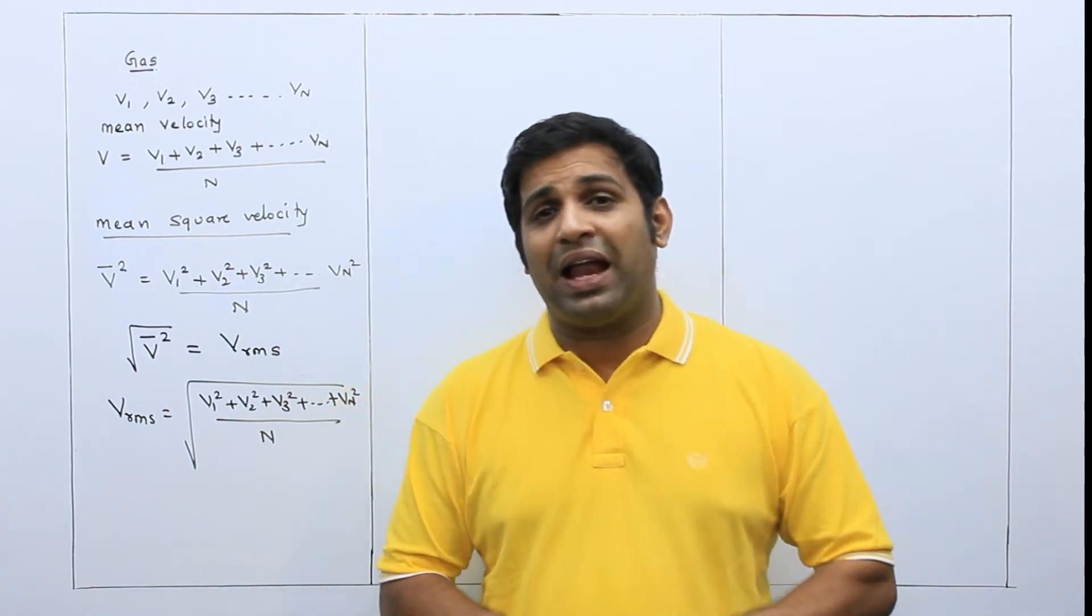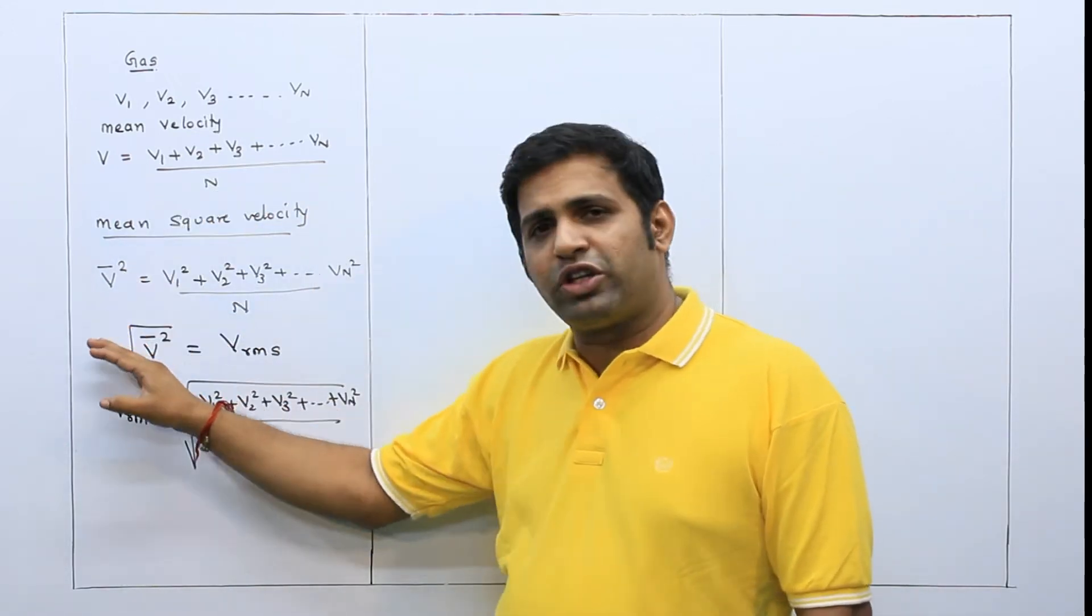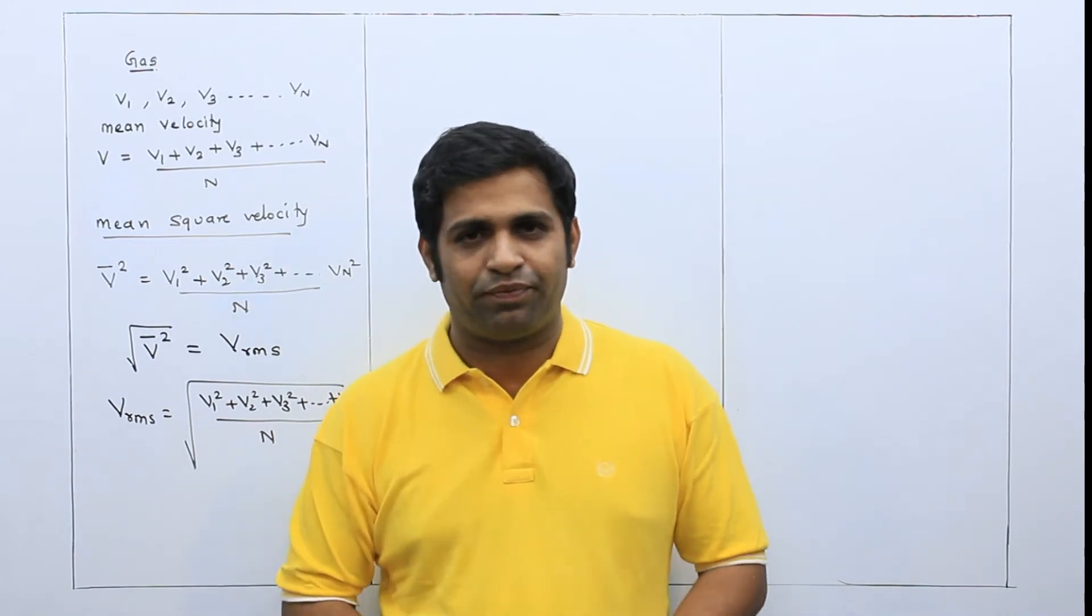Basically, we have used this thing in last derivation. Mean square velocity. I have root for RMS velocity.